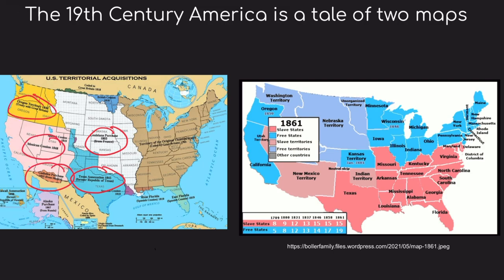These land acquisitions were gained through different means, whether through mutual treaties, purchase agreements, or the use of military force. All of these were spurred by the 19th century belief in manifest destiny, which led Americans to believe that all western territory was their God-given right.